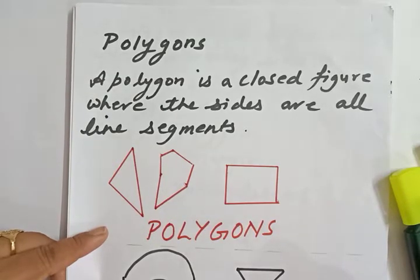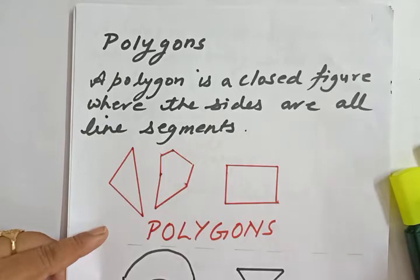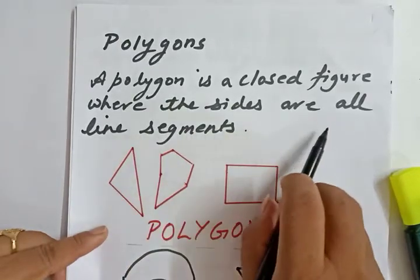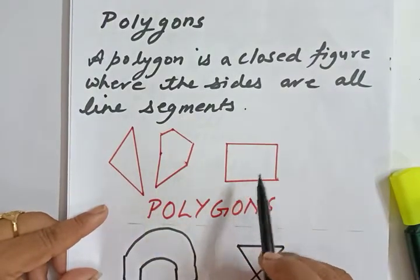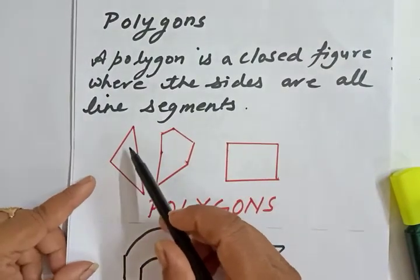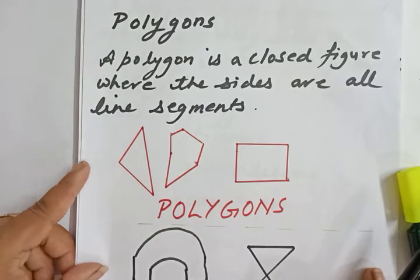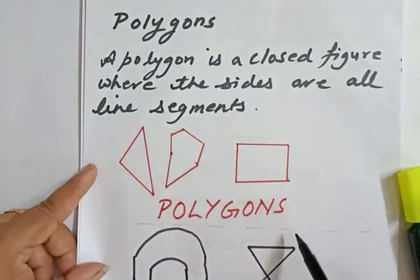Hello students, today we are going to start with the chapter Triangles of Class 9th. Before starting, let's recall a few important things. First of all, let's recall what a polygon is. A polygon is a closed figure where all the sides are line segments. A line segment is a part of a line - it is straight and has two end points.